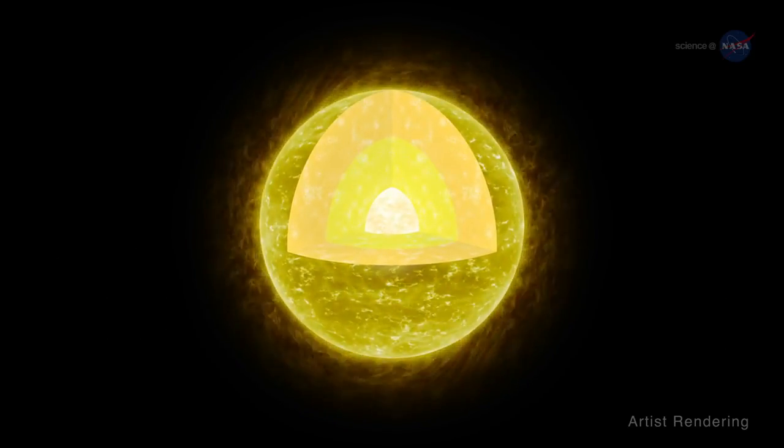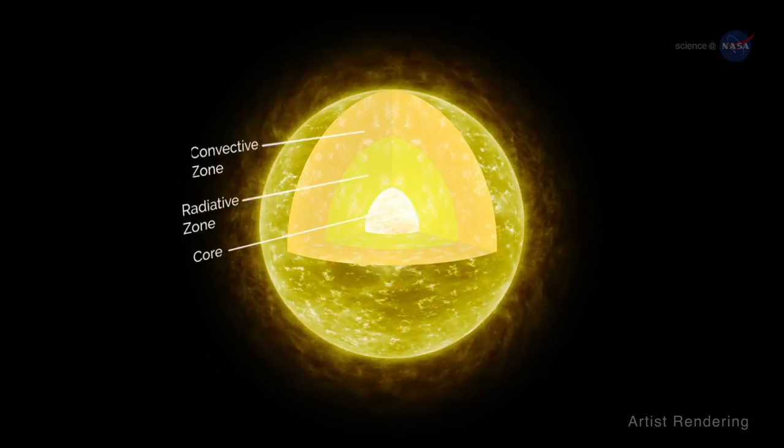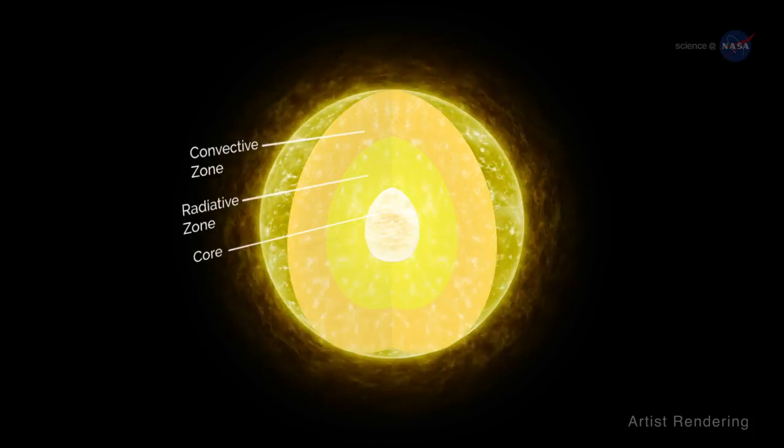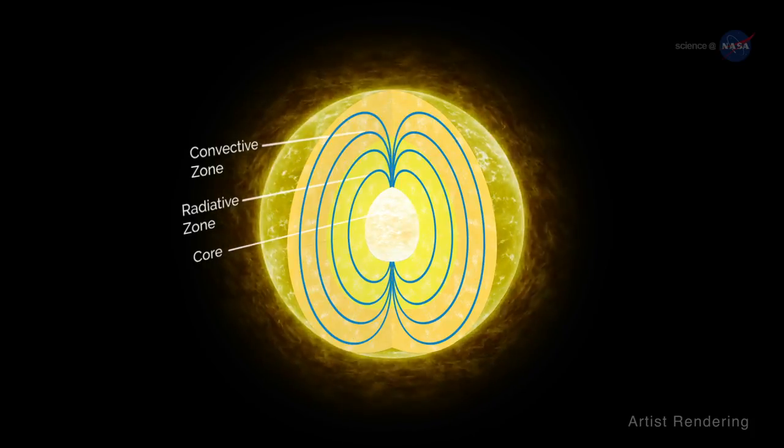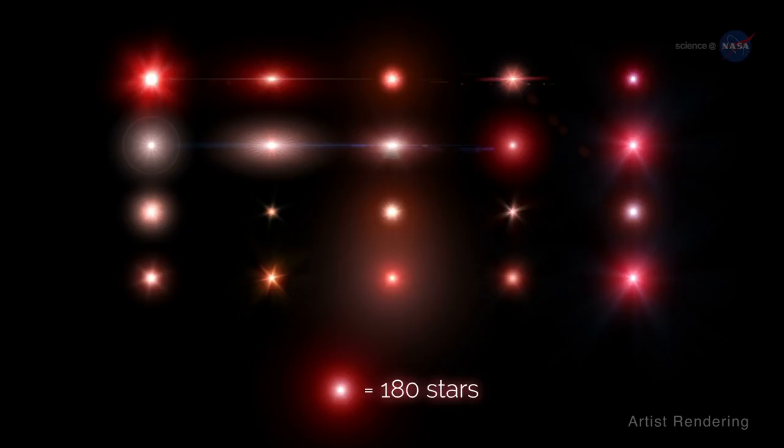Astro-seismologists analyze brightness fluctuations to study the interior structure of stars, including the strength and distribution of magnetic fields deep below the stellar surface. This is exactly what Stello and colleagues did using Kepler observations of 3,600 red giant stars.